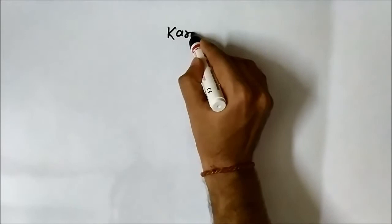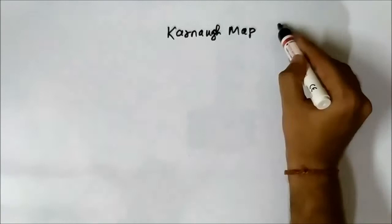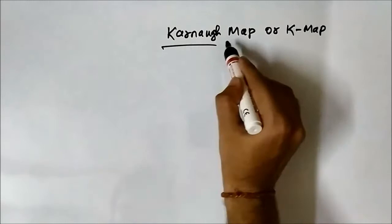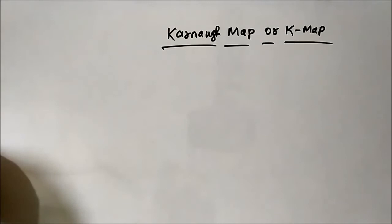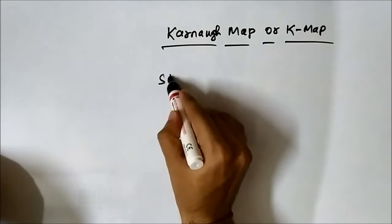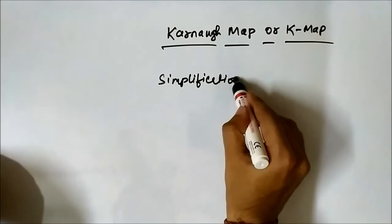We need a method that is more effective in terms of error occurrence and also comparatively less time consuming. This is where the method of Karnaugh map comes into play. Karnaugh map, or K-map, is a method or technique of simplification of Boolean expressions.